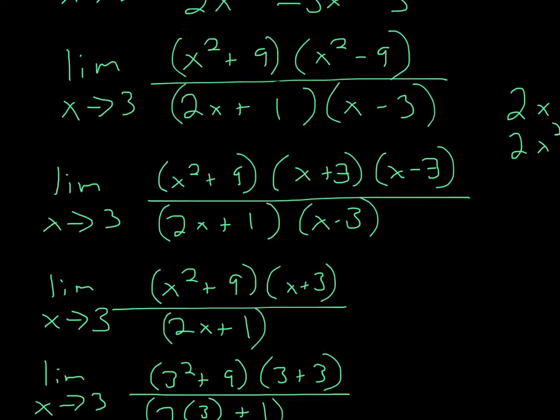So, the only one you can get an x minus 3 from is this one. So, we factor this out, and so that becomes x plus 3, x minus 3. We leave this the same over 2x plus 1, x minus 3.